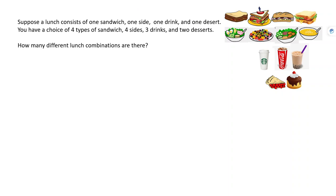Hi class. We're going to talk about counting — the sort of counting you need for probability problems and counting problems. First, I'm going to talk about a general counting technique that uses trees to help you visualize what's going on. Then I'll work through four examples: permutations with and without replacement, and combinations with and without replacement. The last slide will be a review of everything covered.